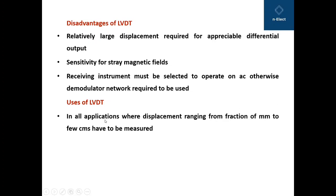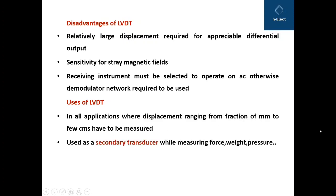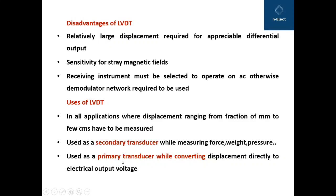LVDT can be used in all applications where displacement ranging from a fraction of a millimeter to a few centimeters must be measured. It is used as a secondary transducer while measuring physical quantities like force, weight, and pressure — for example, in a Bourdon tube and LVDT combination for pressure measurement. It is also used as a primary transducer when converting displacement directly to an electrical output voltage. This concludes the discussion on inductive transducers through the example of LVDT, covering its graphical characteristics, advantages, disadvantages, and uses.